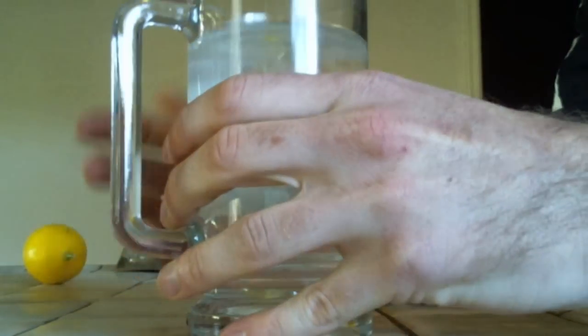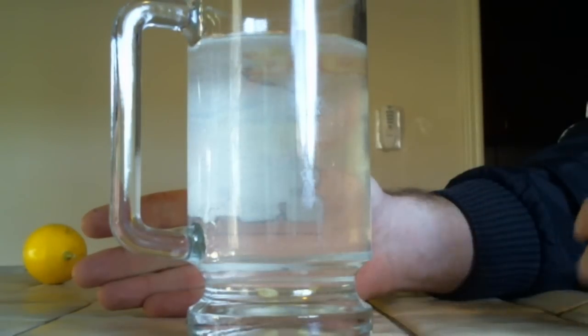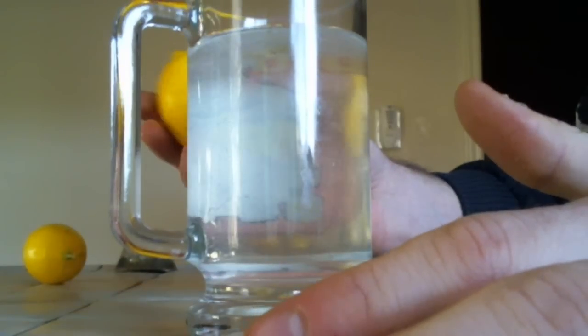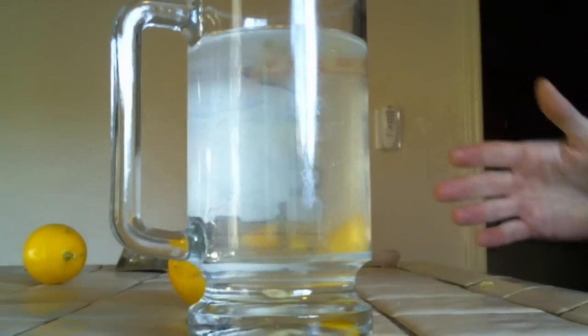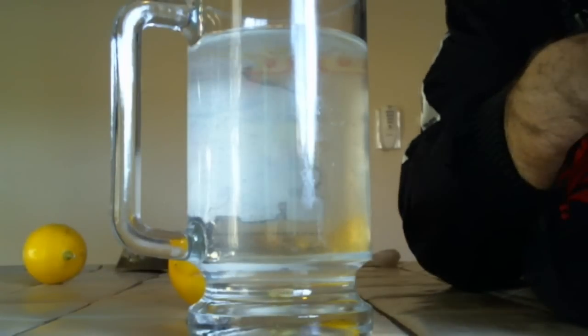This is the recipe that I follow: I take a half a teaspoon of baking soda and the juice of half of a lemon, mix it with the restructured water, and I drink that preferably when I wake up.